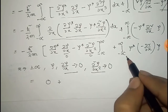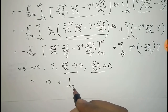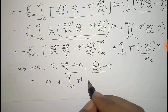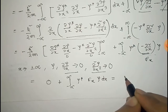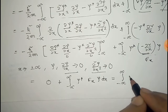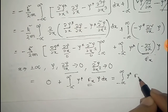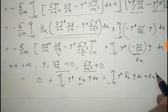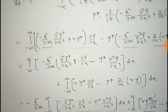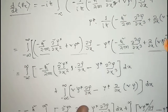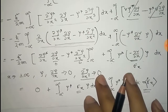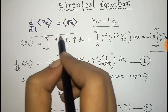What remains is the integral from −∞ to +∞ of ψ*(−∂V/∂x)ψ dx. Since −∂V/∂x equals the force F_x, this becomes the integral of ψ* F_x-hat ψ dx, which is the expectation value of force. Thus d/dt⟨p_x⟩ = ⟨F_x⟩, proving the second Ehrenfest equation: the time derivative of the average linear momentum equals the average force.